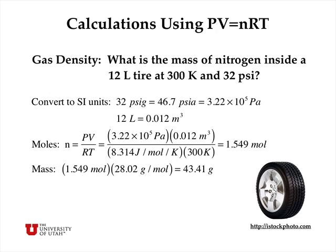We can calculate the mass of nitrogen in an automobile tire by converting to SI units. If the gauge pressure is 32 pounds per square inch, the absolute pressure would be 46.7 psi absolute, or 3.22 times 10 to the fifth pascals. With a volume of 12 liters, which is 0.012 cubic meters, the number of moles of nitrogen gas in the tire is 1.55 moles. Using the molar mass of nitrogen, that gives us 43.41 grams of nitrogen gas at 300 kelvins.